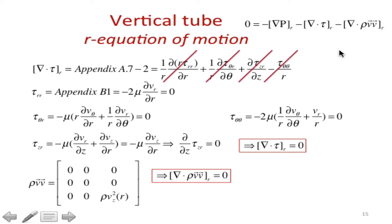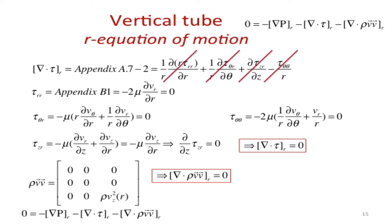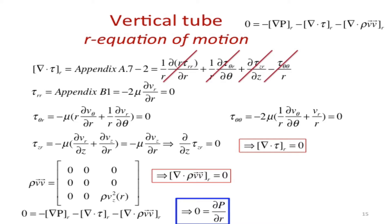After all that canceling, the R-component of the rho-VV tensor is also zero. So we get zero equals zero. The equation of motion is more general, but in these relatively simple cases you have to cancel all the terms, which can be more time consuming than doing the shell balance. What I learned is that my pressure doesn't depend on R — something we inherently assumed before, but here I actually proved it.